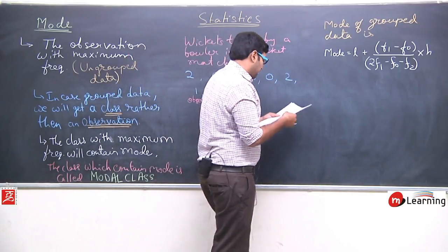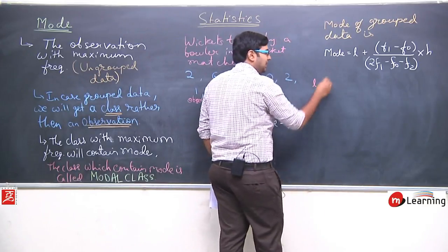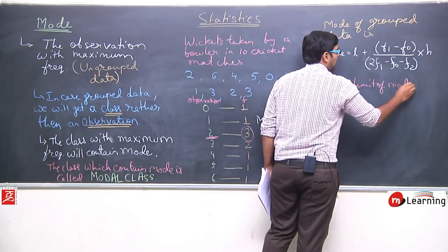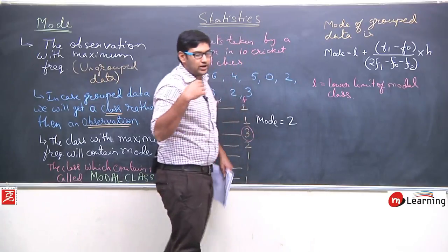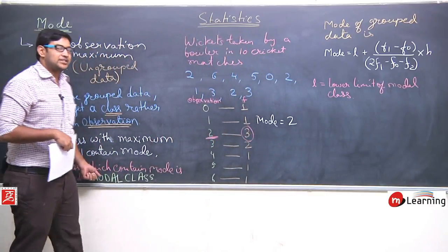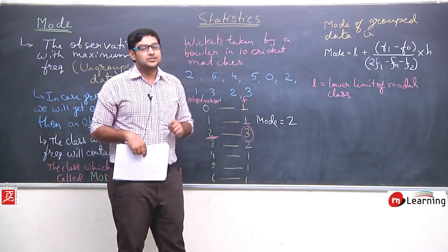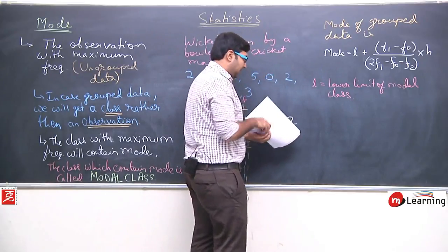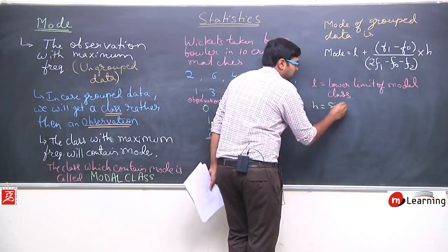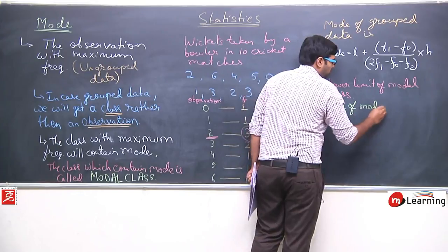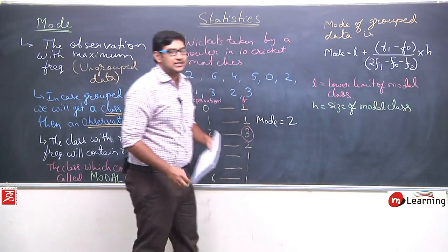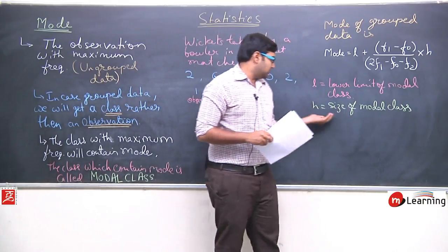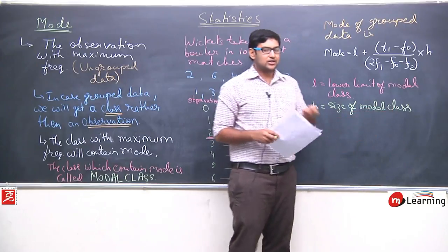The terms used in this formula: L is the lower limit of the modal class. The modal class is the class with the highest frequency, and L is the lower limit of that class. H is the size of the modal class — that is, upper limit minus lower limit, also called the class interval.